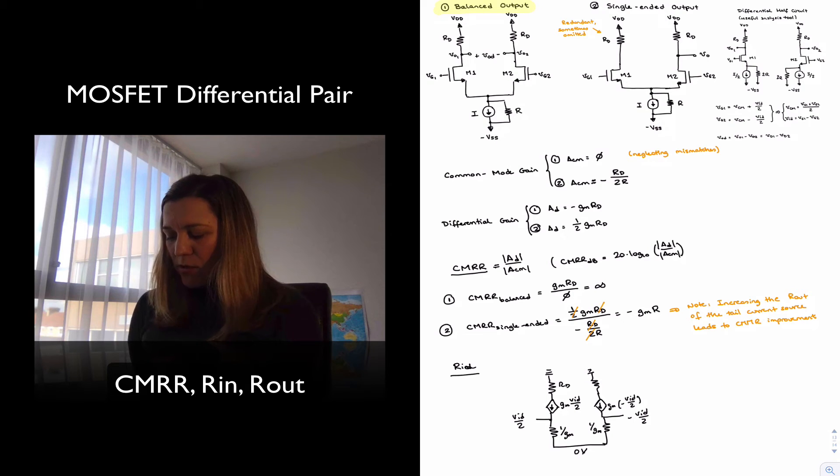Right. So I basically redrew my small AC circuit, but now I've actually gone ahead and replaced the transistor with its T model. And so my RID, my differential input resistance, I can just calculate it by going between two input terminals from one to the other. So I will have one over GM in series with one over GM, or RID will be equal to two divided by GM.